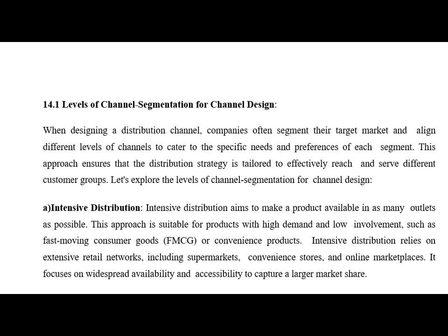Number one, we have intensive distribution. Intensive means making the product available in as many outlets as possible. For example, FMCG — all fast moving consumer goods companies like Unilever and Procter & Gamble use intensive distribution. This approach is very suitable when we have high demand and low involvement, such as convenience goods. Intensive distribution relies on an extensive retail network — supermarkets, convenience stores, online marketplaces — focused on widespread availability and accessibility to capture a large market share.